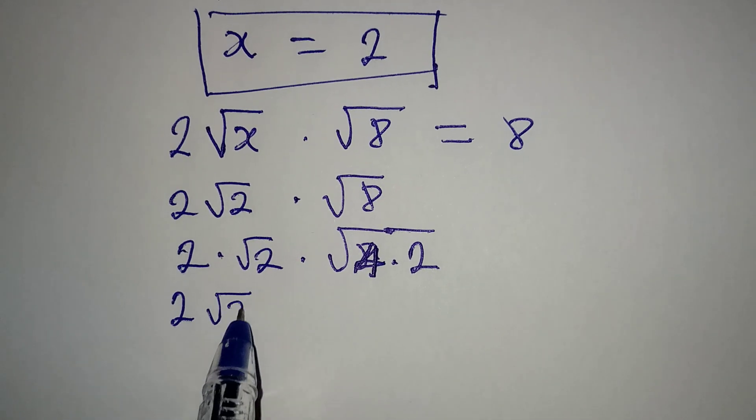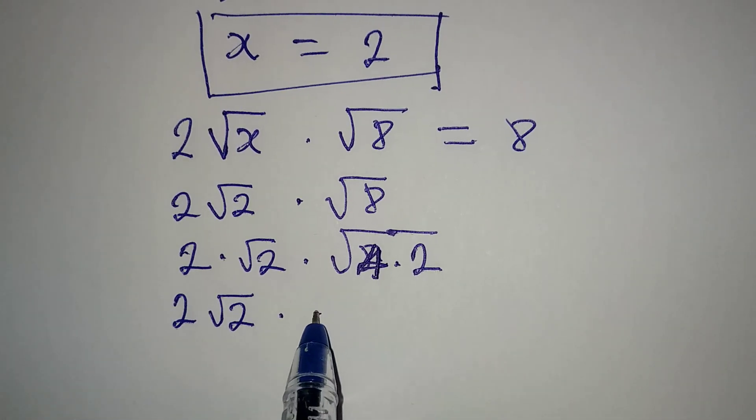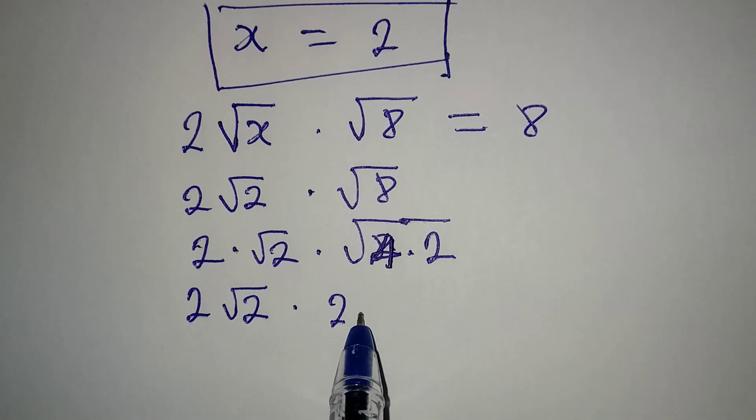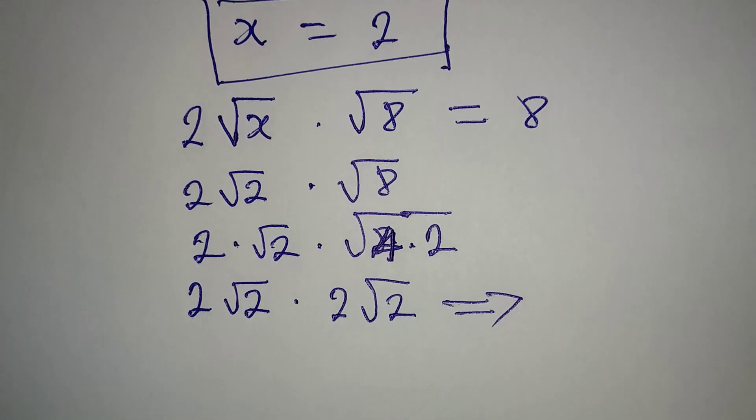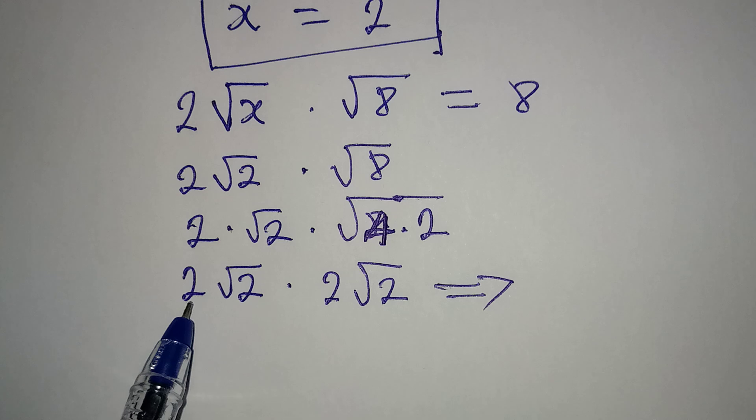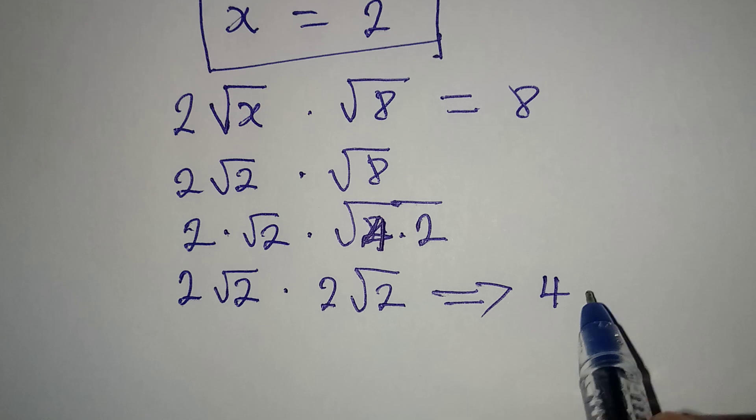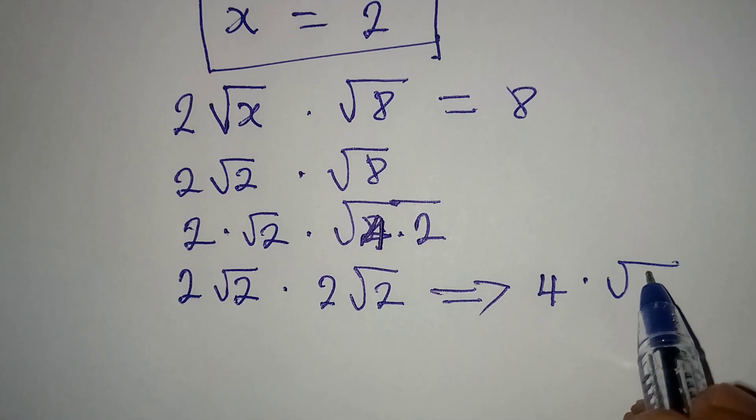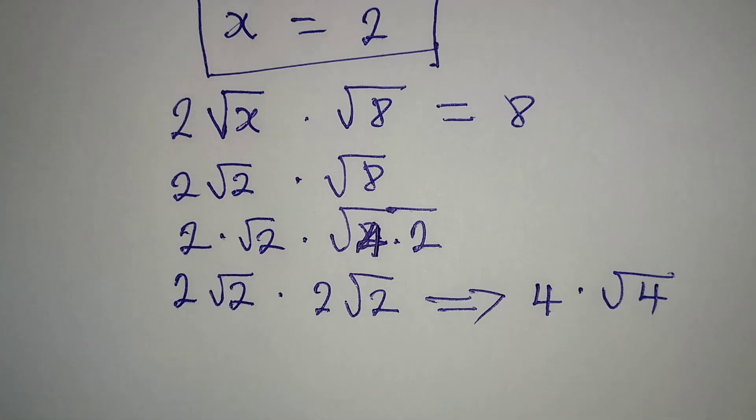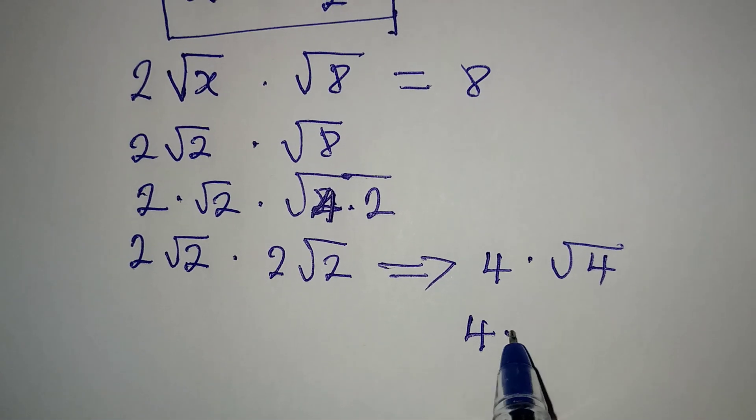So if you continue, then you have 2√2 multiply by √4 is 2, then √2. This implies that we are having 4 times 2, because 2 times 2 is 4, then multiply by √2 times √2, which gives us √4. So we are having 4 times 2, which is 8.